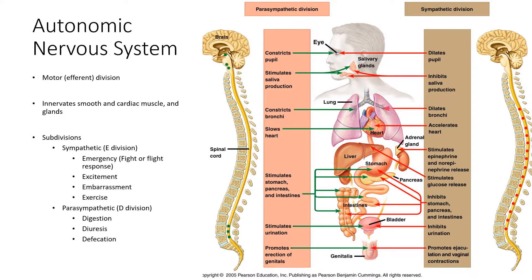The parasympathetic branch is also called the D-division because it is involved primarily in digestion, diuresis, and defecation. If we look at the picture, the parasympathetic division causes constriction of the pupil, stimulates saliva production, constricts the bronchi, slows your heart rate, stimulates the stomach, the pancreas, and the intestine, and stimulates urination and promotes the erection of genitals.